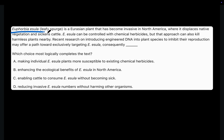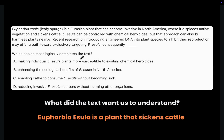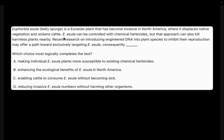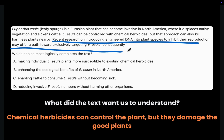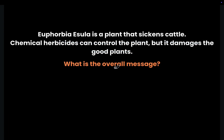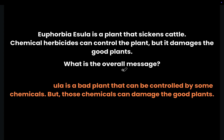Here's the next question. Euphorbia isola, or leafy spurge, is a Eurasian plant that has become invasive in North America, where it displaces native vegetation and sickens cattle. What did the text want us to understand? It wanted us to understand that euphorbia isola is a plant that sickens cattle. E. isola can be controlled with chemical herbicides, but that approach can also kill harmless plants nearby. Chemical herbicides can control the plant, but it damages the good plants. Before we move on to the last sentence connected to the blank: the text wanted us to understand that euphorbia isola is a bad plant that can be controlled by some chemicals, but those chemicals can damage the good plants.